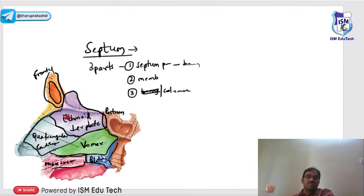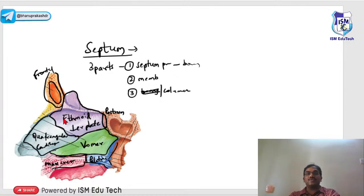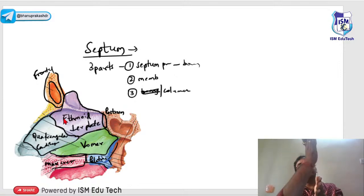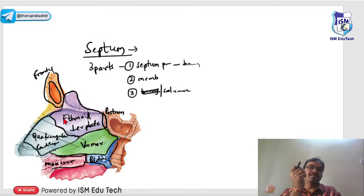These are the various bones taking part in the formation of the septum — difficult to remember, but practicing the diagram helps. Anteriorly is the quadrangular cartilage, then the perpendicular plate of the ethmoid from above, then the vomer posteriorly, the rostrum of the sphenoid above, and the maxillary crest and palatine crest at the floor. During septoplasty, the rostrum is a very hard structure encountered in posterior septectomy.